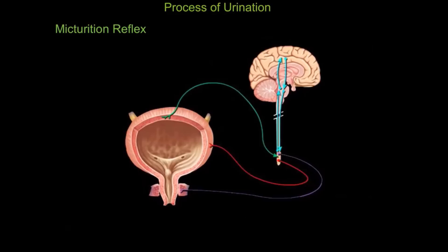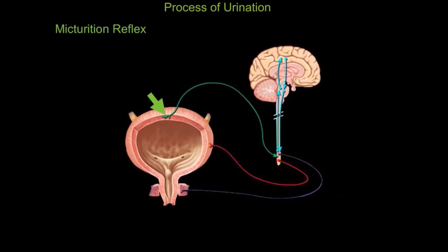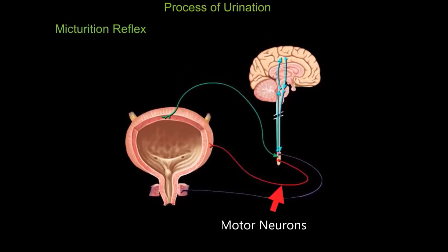Micturition is another term for urination. The urinary bladder is composed of transitional epithelial tissue and smooth muscle. Embedded in the wall of the urinary bladder are sensory stretch receptors attached to sensory neurons that synapse at the spinal cord with motor neurons, which stimulate the contraction of the smooth muscles lining the bladder walls. When the bladder becomes distended as it fills with urine, the stretch receptors send an action potential down the sensory neuron.